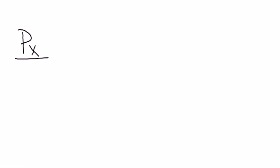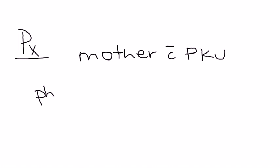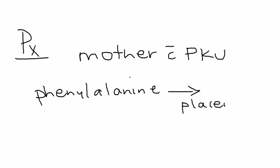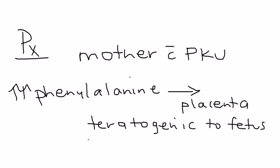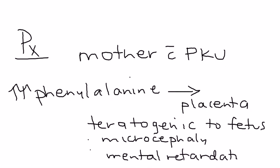An important point regarding prognosis: if a woman who is pregnant has PKU, she must control her phenylalanine levels. If she doesn't, the excess phenylalanine can cross the placenta and become teratogenic to the fetus, causing severe consequences including microcephaly (small brain) and mental retardation. Therefore, a pregnant woman with PKU must manage her diet very closely.